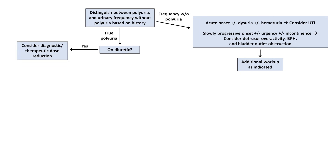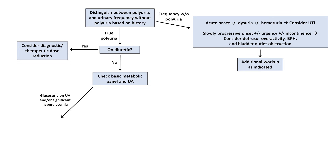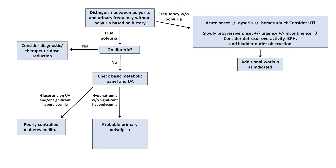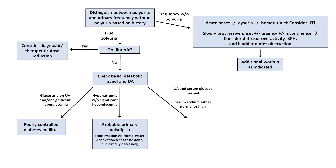If the patient is on a diuretic, consider a diagnostic and therapeutic dose reduction. If they are not on a diuretic, or if lowering the dose did not help, consider the basic metabolic panel and UA. If there is significant glucosuria on the UA and/or significant hyperglycemia, the patient likely has poorly controlled diabetes mellitus. If there is hyponatremia without significant hyperglycemia, that suggests primary polydipsia — a formal water deprivation test can confirm but is rarely necessary. And if the UA is normal, serum glucose is normal, and serum sodium is either normal or high, it suggests the patient has diabetes insipidus, which should be worked up with a water deprivation test.